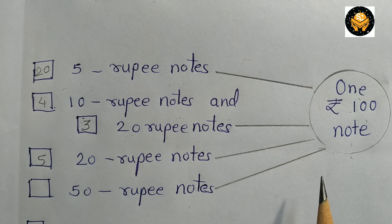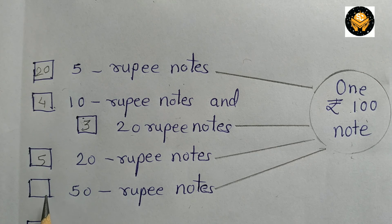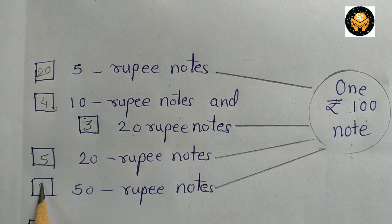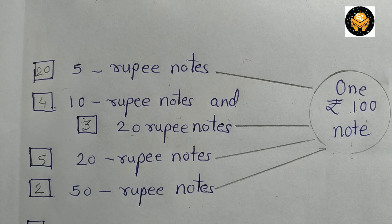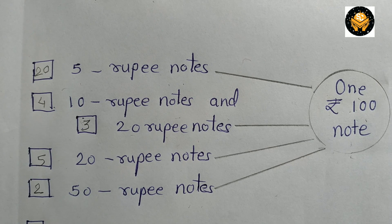Now suppose you want change of 100 rupees in the form of 50 rupee notes. 2 fifty-rupee notes are equal to 100 rupees, since 2 fifties are 100. In this way we can solve this example.